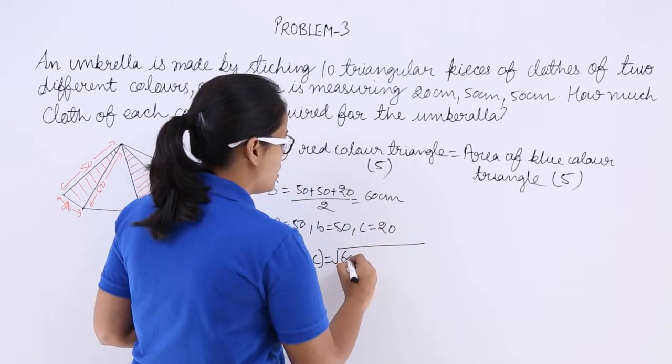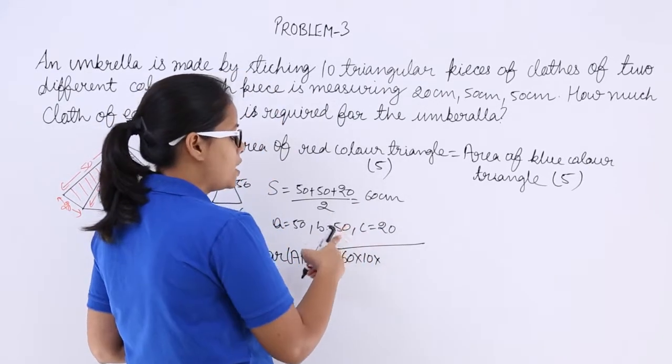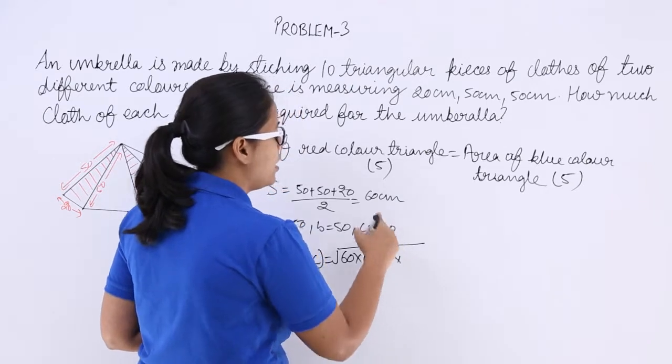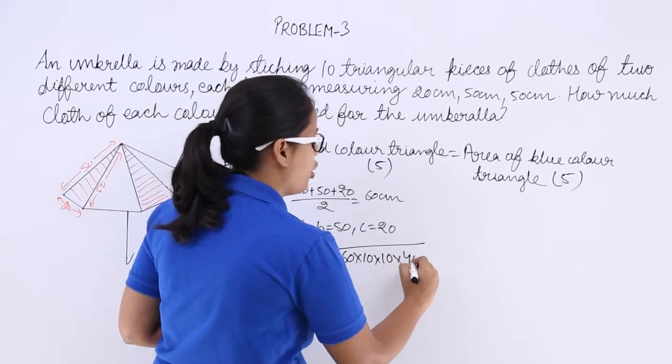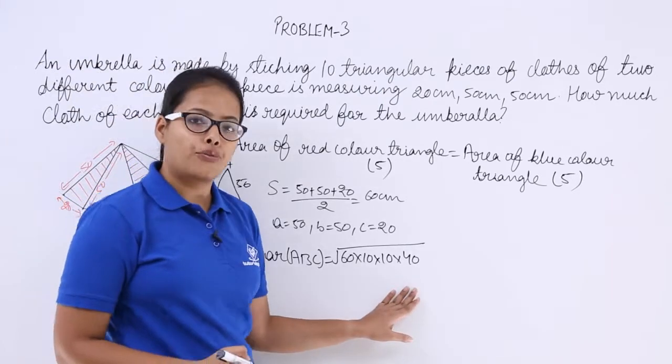S is equal to 60. S minus A, this will be 10. S minus B, this will be 10 again. S minus C, this will be 40, because when you subtract 20 from 60, what you will get? 40.